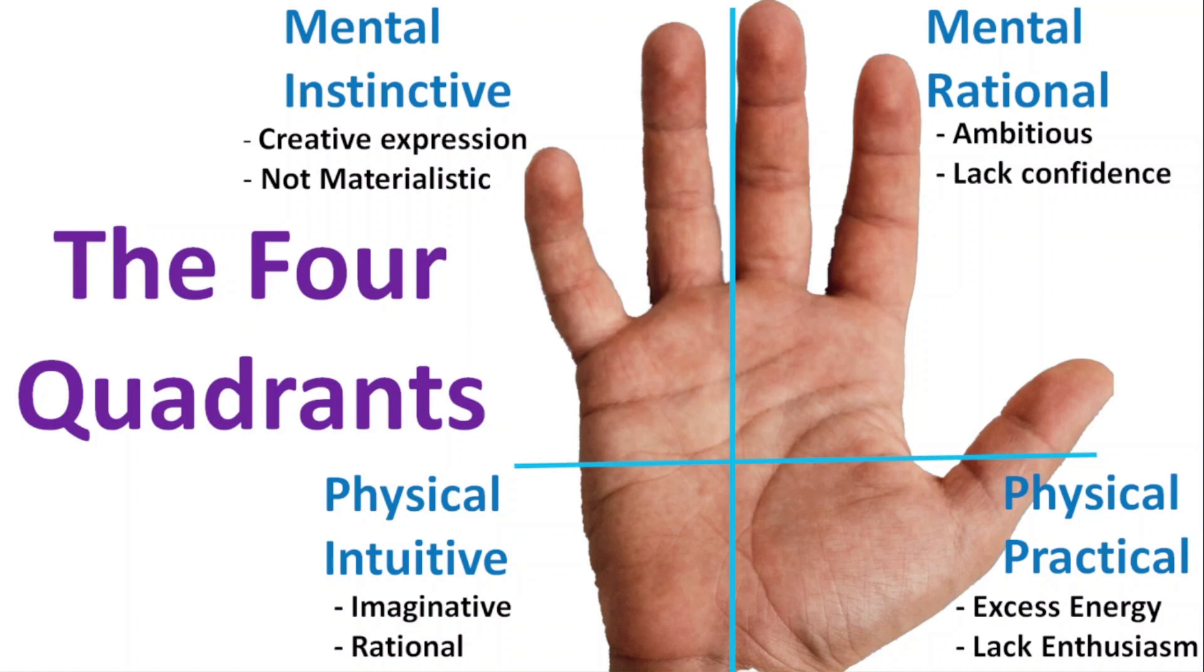If your mental rational quadrant is most developed, you are goal oriented and ambitious. If this section is less developed than other sections, you could lack confidence. Having an index finger that is longer than your ring finger could counter this. Check out the video link on the top right for the video on what your fingers say about you.